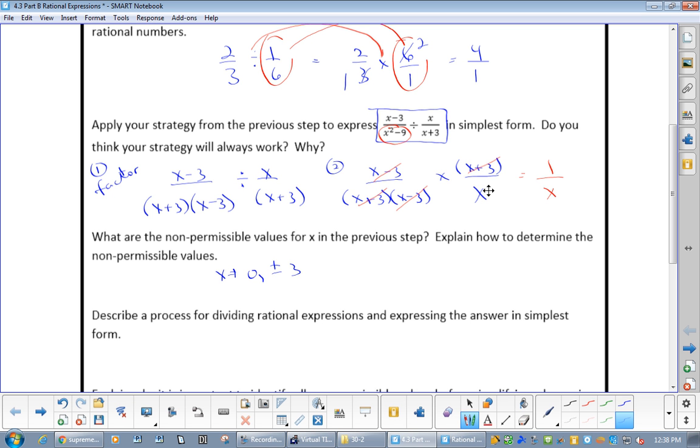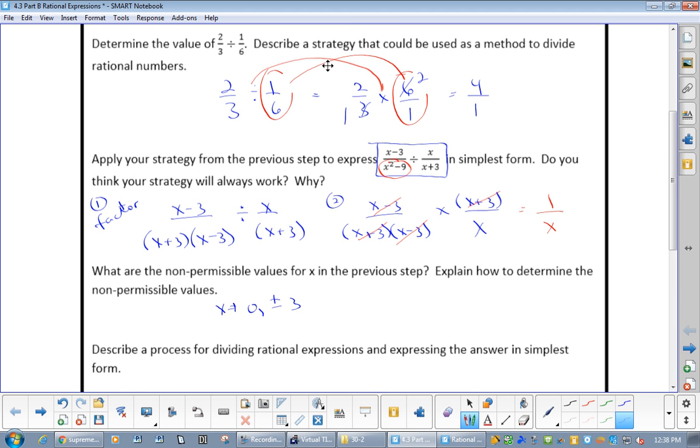Now, the non-permissible values. You need to go back to the original question. What's bad here? What's bad right there? Negative 3. There? 3. There? Negative 3. Now, even though this is going to be flipped, it doesn't matter. If it was bad here, it still continues to be bad. So, we've got plus or minus 3. That handles what we see in the question.